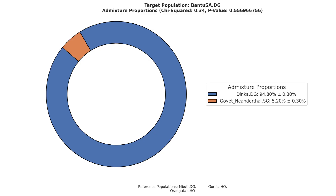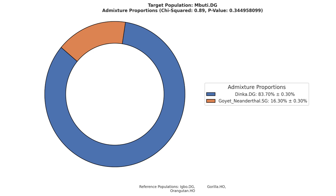The Bantus of South Africa have 5.2% archaic contribution; the Pval is 0.6, which is very satisfactory. The Komani of South Africa are estimated to have 9.5% archaic admixture. This model is a bit worse than the others, with a Pval of 0.17, but still well past the barrier of passing. The Muti Pygmies are the population that scores highest archaic admixture at 16.3%; this model gives a Pval of 0.3, which is also satisfactory.